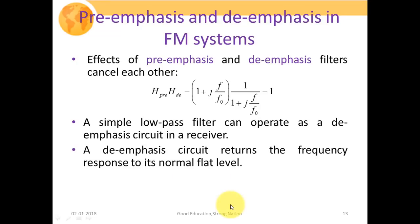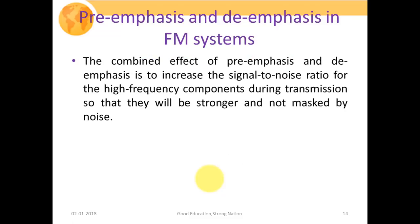The de-emphasis circuit returns the frequency response to its normal flat level, performing the inverse operation in contrast with the pre-emphasis circuit. The combined effect of pre-emphasis and de-emphasis is to increase the signal-to-noise ratio for the high frequency components during transmission, so that they will be stronger and not masked by the noise.